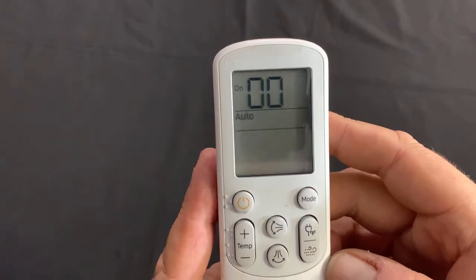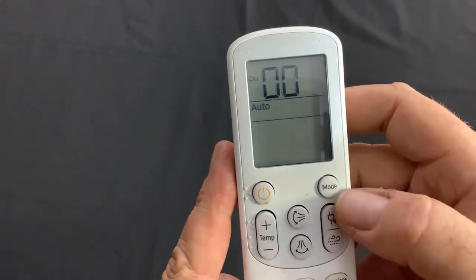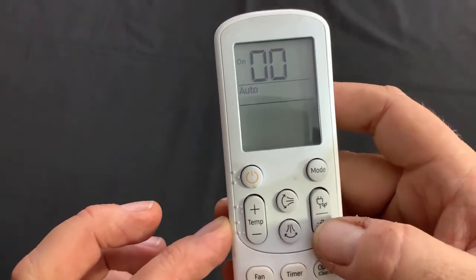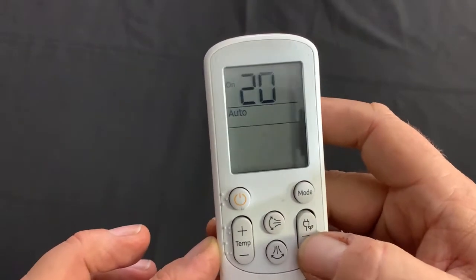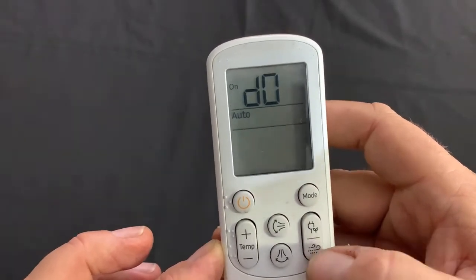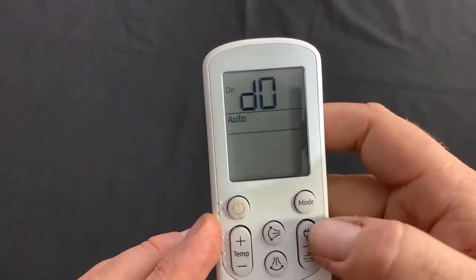For this code, we're only going to focus on the first six segments. The first segment is going to be D. We're going to change the first segment by pressing on the bottom portion of the right button until we get to the letter D. Then we want to change the second segment to the number one by pressing the top portion of the right button.